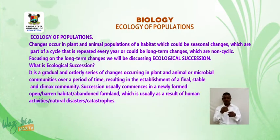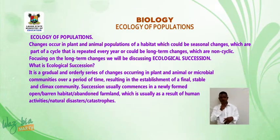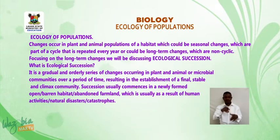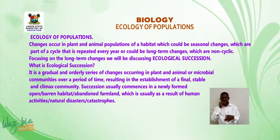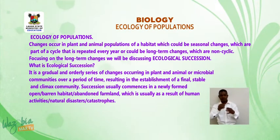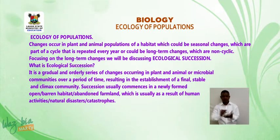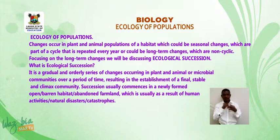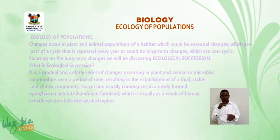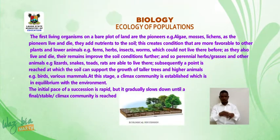Ecological succession results in the establishment of a final stable and climax community. Succession usually commences in a newly formed open or barren habitat, or abandoned farmland, which is usually as a result of human activities, natural disasters, or catastrophes.